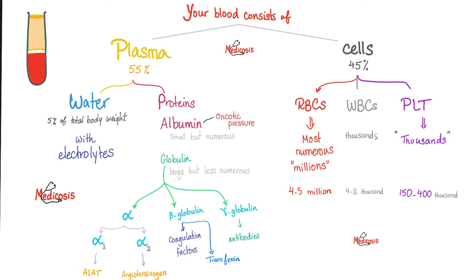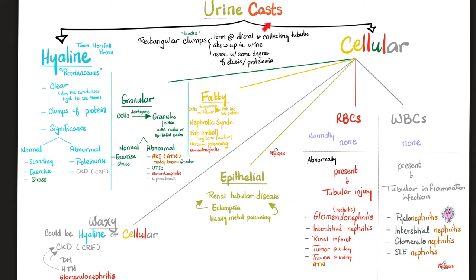Plasma proteins are made of albumin or globulin. And if you've watched the video on urine casts, they are divided into hyaline casts and cellular casts. The hyaline casts are proteinaceous — they are made of proteins. Mainly the TAM Horsfall protein, the uromodulin.